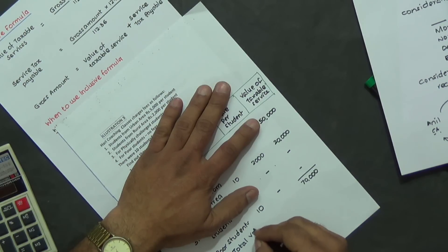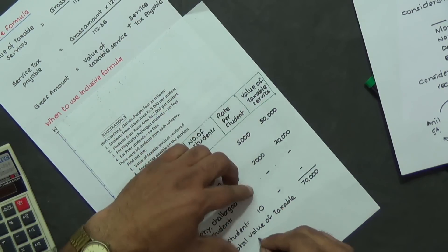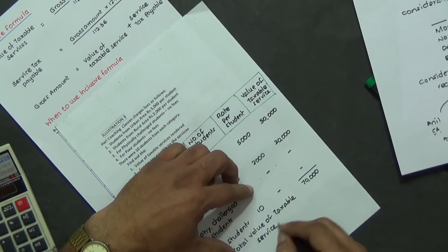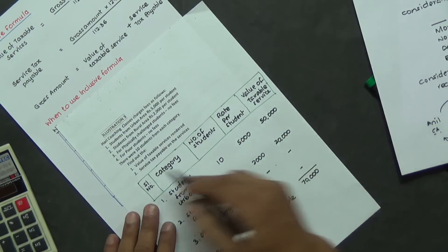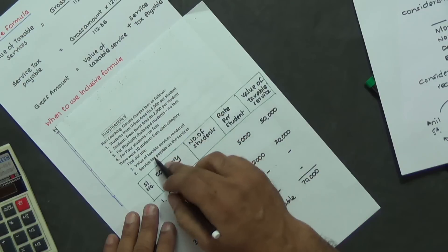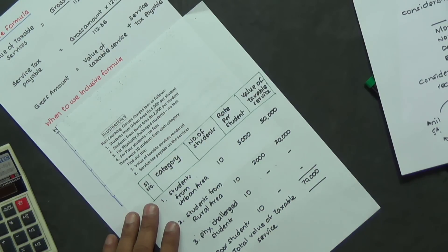Total value of taxable service, 70,000. Value of service rendered taxable service. So this is an answer to question number one.